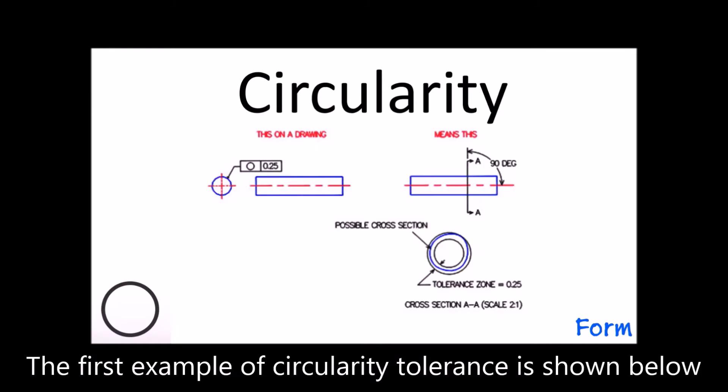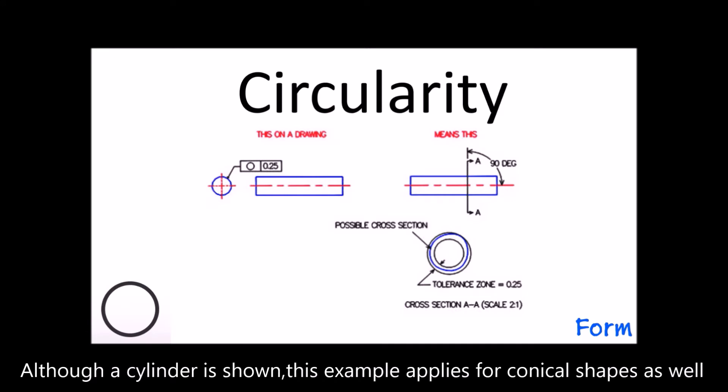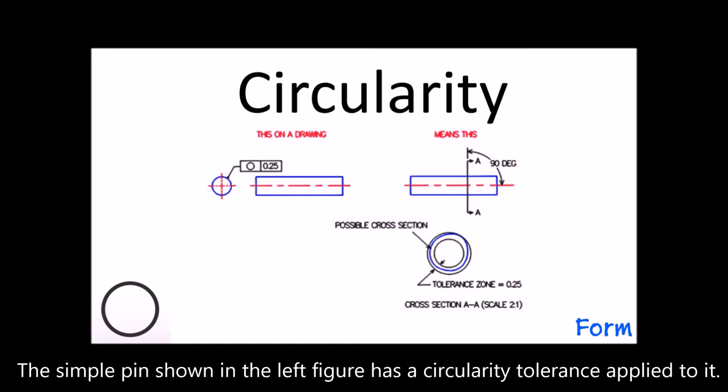The first example of circularity tolerance is shown below. Although a cylinder is shown, this example applies for conical shapes as well. The simple pin shown in the left figure has the circularity tolerance applied to it.